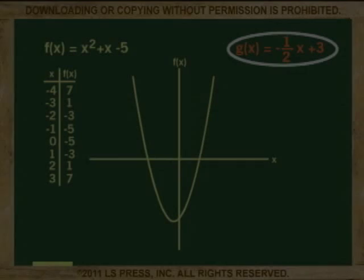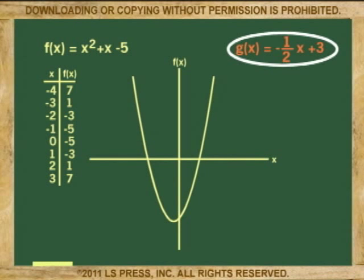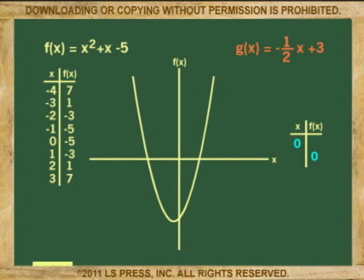Now to the line. Because two points are enough to plot a line, we'll use the x and y intercepts only. When x is zero, the function is 3. And when the function is zero, 0 = -1/2x + 3. Add 1/2x to both sides and we get 1/2x = 3. Multiply both sides by two and the value of x is 2 times 3 equals 6. We plot these two values and draw the line.